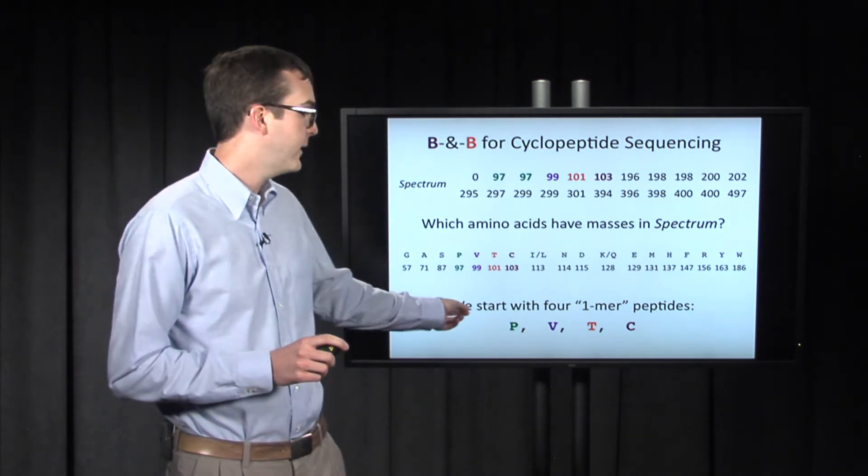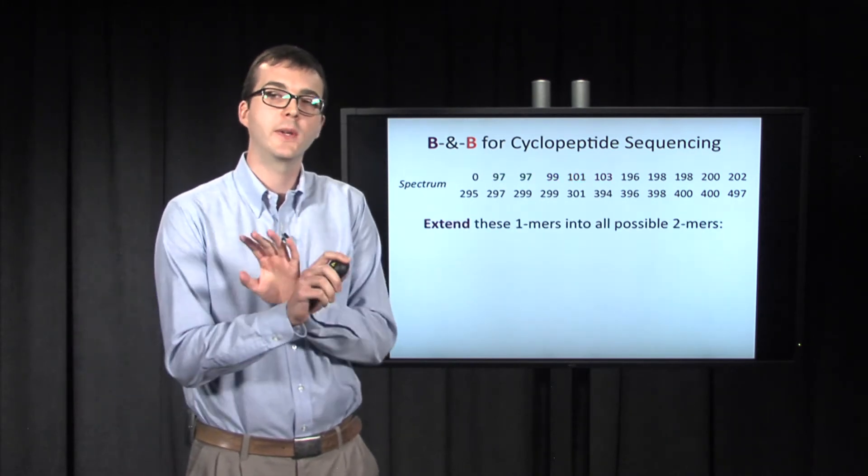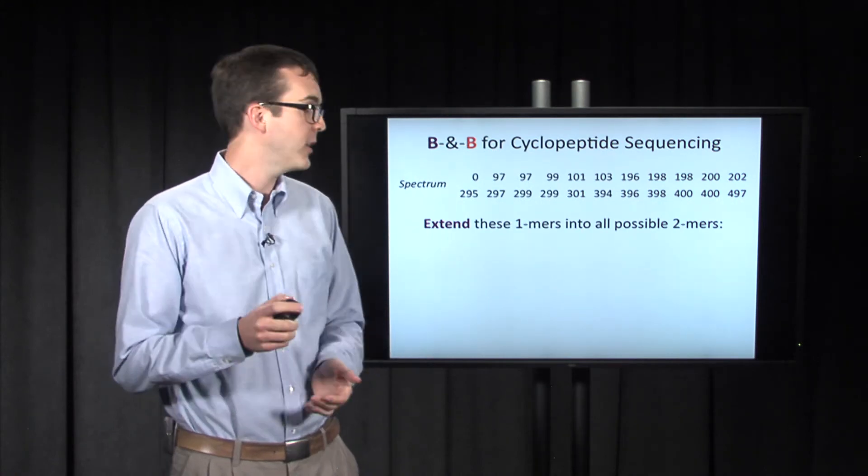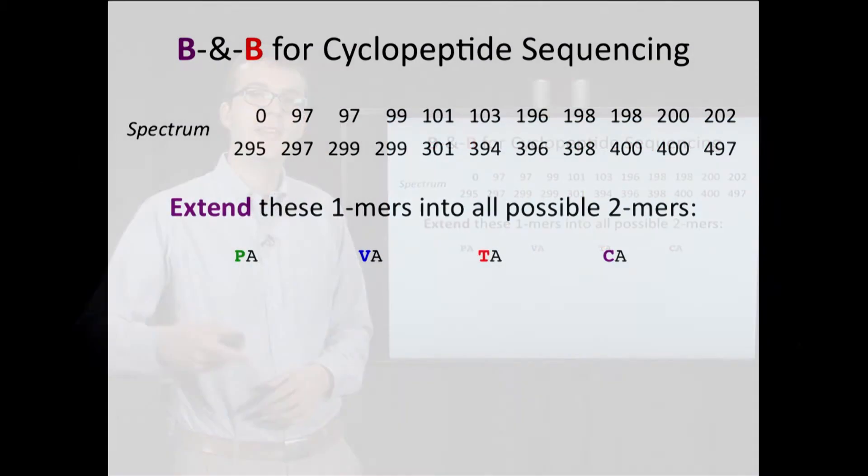So we're going to start with four one-mer peptides. All right, we're going to start with just these single amino acids. And what we're going to do is we're going to extend these four into all possible two-mer peptides. So all possible amino acid strings of length two. So we get PA, VA, TA, and CA. We get PC, VC, TC, and CC, and so on.